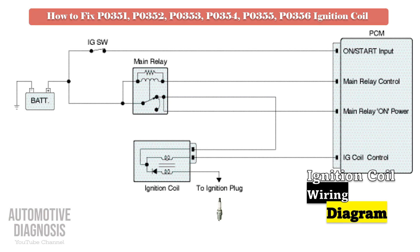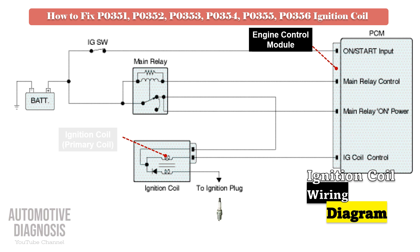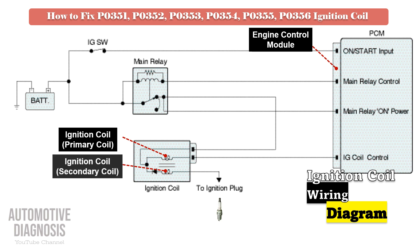Before doing anything, it is very important to review the ignition coil wiring diagram. As soon as you turn the ignition switch to the on position, power supply will be provided to the ignition coils via the engine main relay, so you must have battery voltage on that pin.